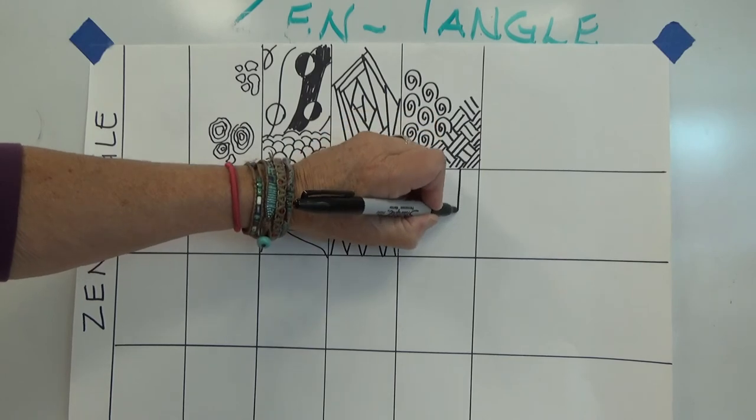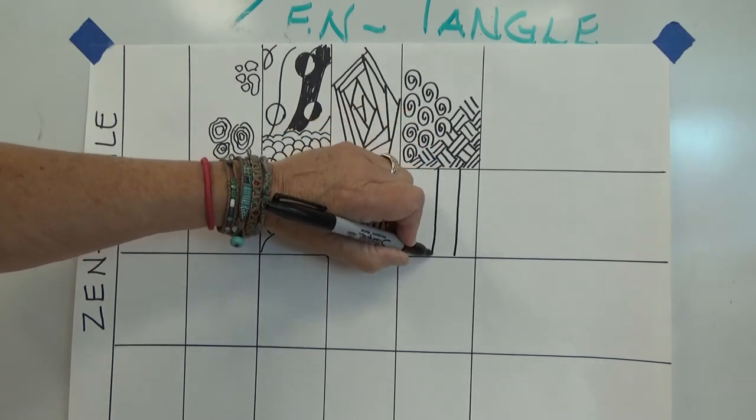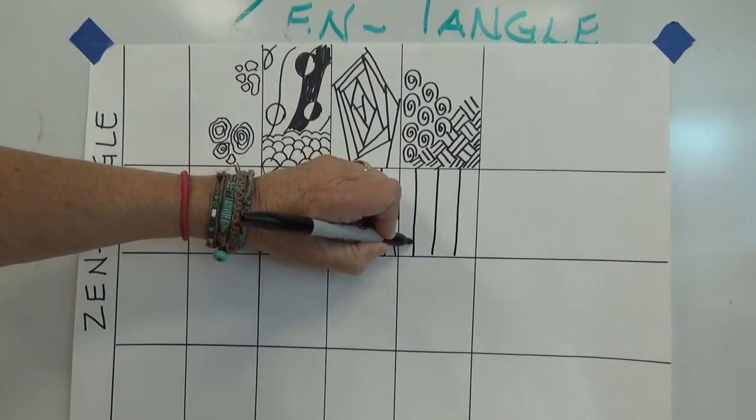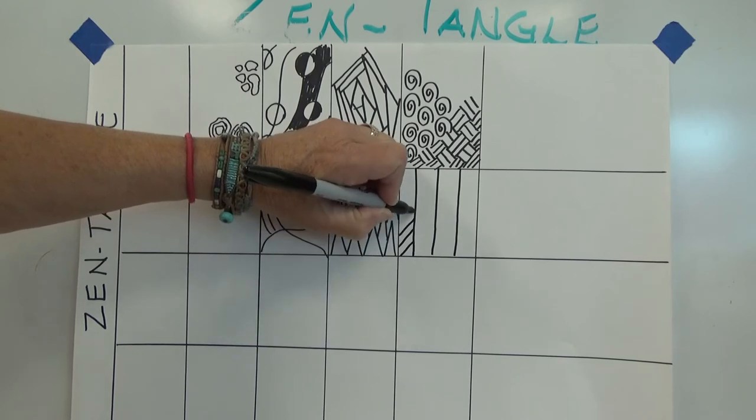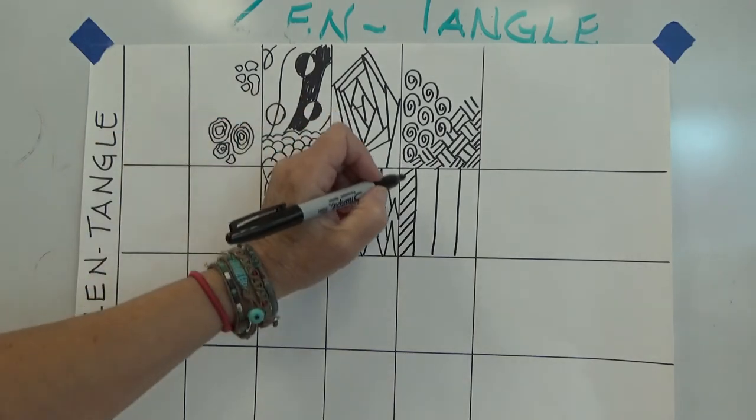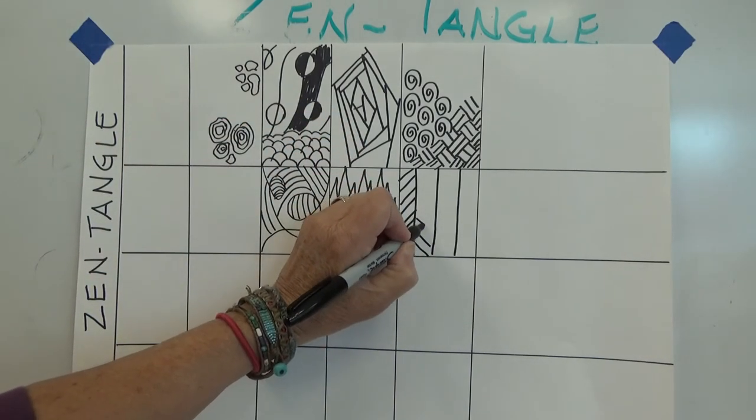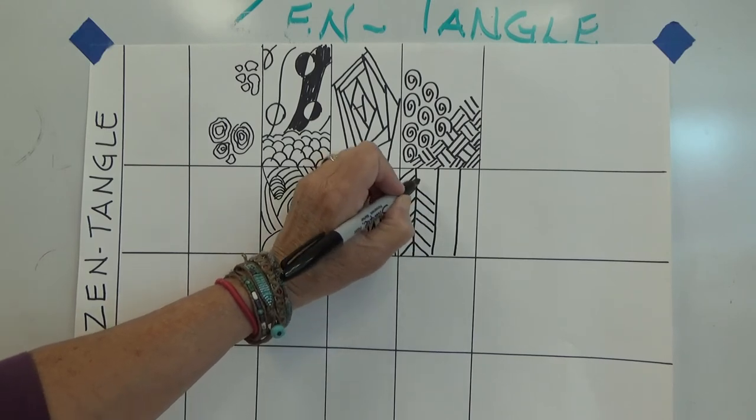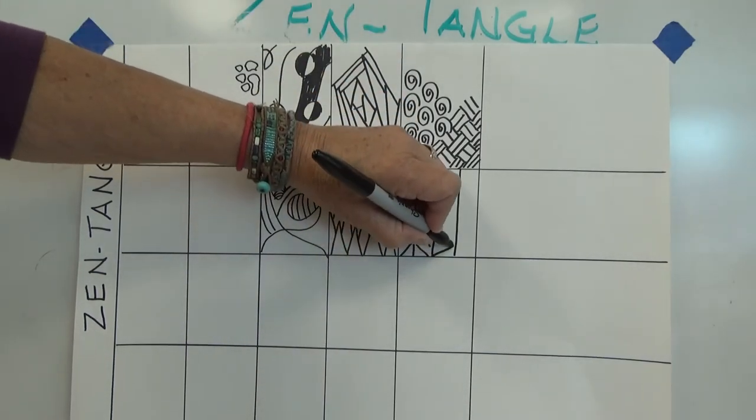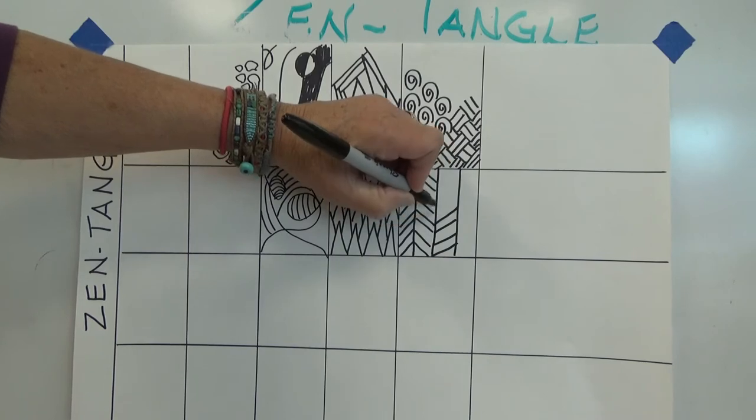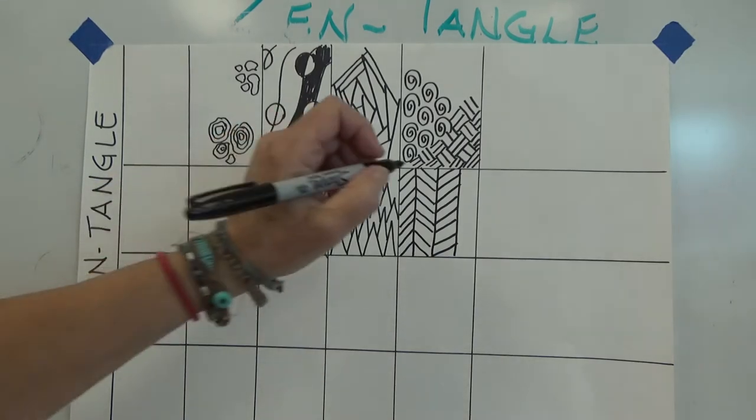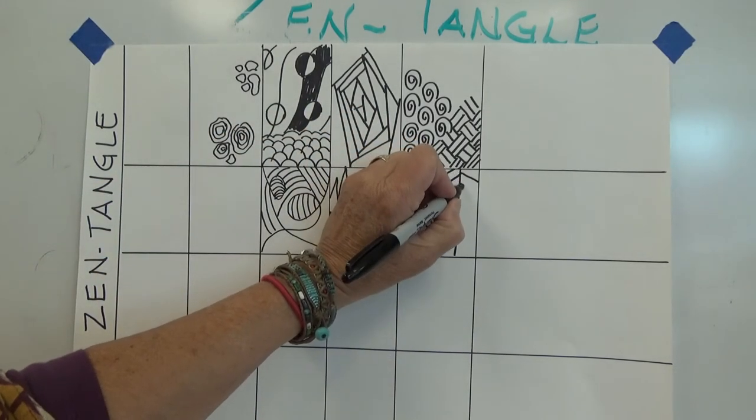You could just draw some vertical lines. And then in there, you could draw diagonal lines. And then do the opposite, and again, the opposite. See how we're creating pattern? Almost looks like an optical illusion.